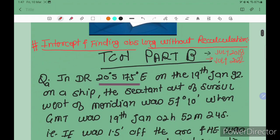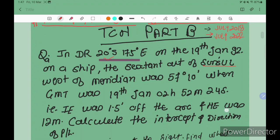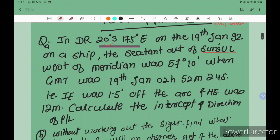The question is: DR position is 20 degrees South and 175 degrees East. On 19 January 1992, on a ship, the sextant altitude of Sun upper limb west of meridian was 57 degrees 10 minutes when the GMT was 19 Jan 02 hours 52 minutes 24 seconds.